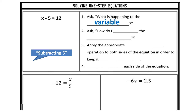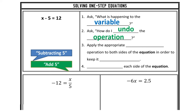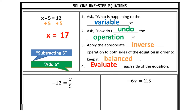X minus 5 equals 12. The 12 is by itself — it's not affecting the variable. X minus 5, so I'm subtracting 5. How do I undo this operation? I'm going to use my inverse operations. The opposite of subtraction is addition, so I'm going to add 5 to undo subtraction of 5. I'm going to apply the appropriate inverse operation to both sides of the equation in order to keep things balanced. Negative 5 plus positive 5 gives us 0 — that's the identity for addition and subtraction — so x is going to be by itself. 12 plus 5 gives us 17, so x equals 17.